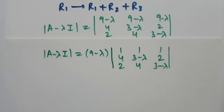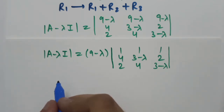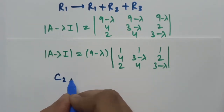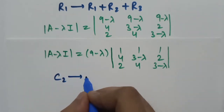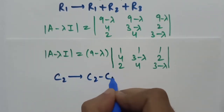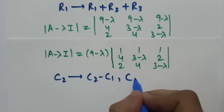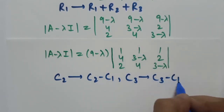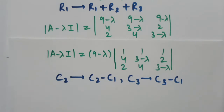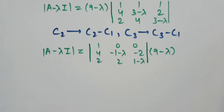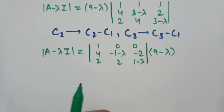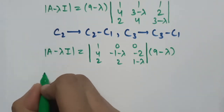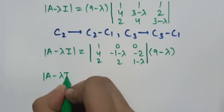After taking (9−lambda) common, we apply column operations: C2 replaced by C2 minus C1, and C3 replaced by C3 minus C1. After applying these column operations, this gives us the simplified value of the determinant of (A minus lambda I).